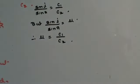Thus, since sine I upon sine R is nothing but the refractive index, we get that the refractive index is nothing but C1 upon C2 — that is, velocity of light in air upon velocity of light in the medium. This is how you prove refraction using Huygens' principle.